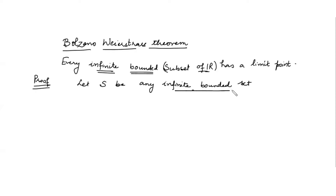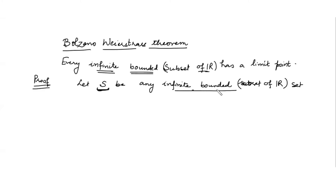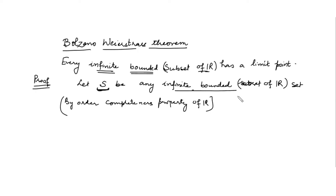If S is an infinite bounded subset of R, then by the order completeness property — specifically, the order completeness property says that any infinite subset of real numbers has a supremum if it is bounded from above. Since S is bounded, it is clearly bounded from above. Therefore, by the order completeness property of R, there must exist a supremum in R.